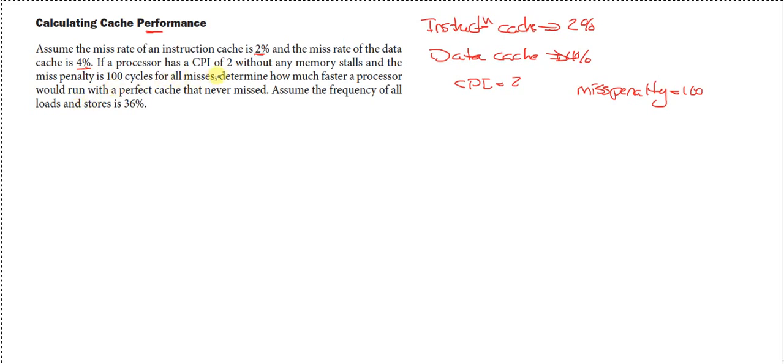If a processor has a CPI of 2 without any memory stalls and a miss penalty of 100 cycles for all misses, determine how much faster a processor would run with a perfect cache that never missed. Assume a frequency of all load and stores is 36%.